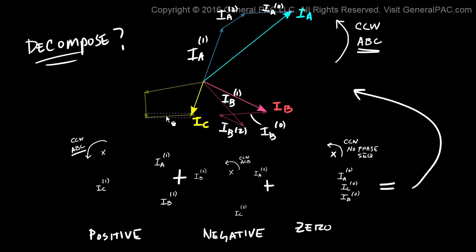And guess what? We get our original phasor. So I_C positive sequence is added to I_C negative sequence, which is added to I_C zero sequence. And we get our original phasor.